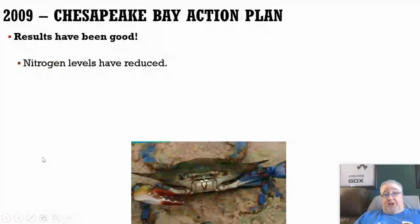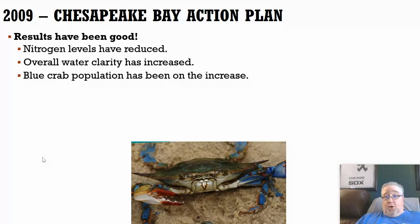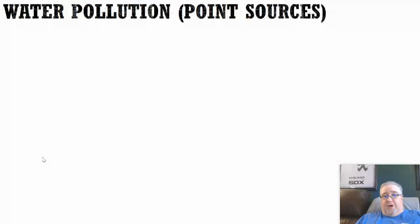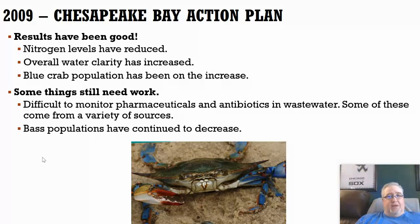To make a long story short, the results of the action plan were actually really good. They found that nitrogen levels — nitrates and phosphates both — reduced. So the amount of algae blooms weren't as great as they were before, water clarity increased, and the blue crab population made a comeback, which was really good. But there are still some things that were difficult to determine — a lot of those chemicals are really difficult to monitor because minute amounts can have a pretty big impact, and measuring those minute amounts can be really challenging. So the bass populations with the estrogen — that's something that really hasn't changed too much and they probably still need to look at that more.